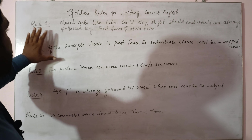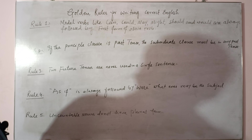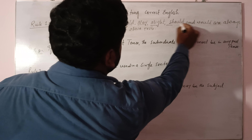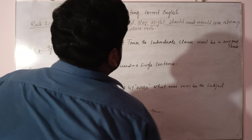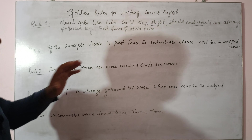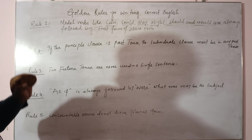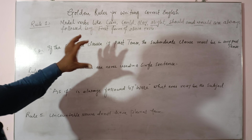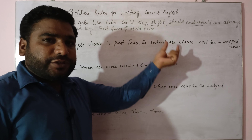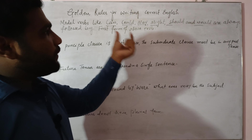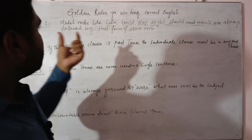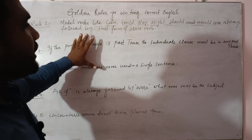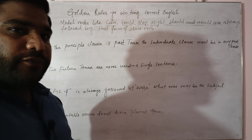Rule number one: the modal verbs in English grammar — can, could, may, might, should, would — whenever these verbs are used in a sentence, they are always followed by the first form of the verb. We always use the first form of the verb.